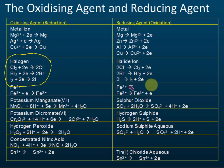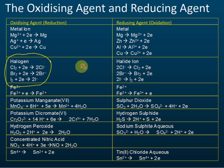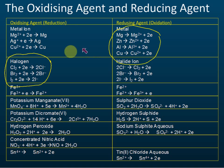Halides are very weak reducing agents, while halogens are very strong oxidizing agents. Second: metals. All metals are reducing agents, and the ions of the metals are the oxidizing agents. Most metals are strong reducing agents, but the ions of metals are weak oxidizing agents.